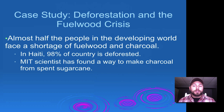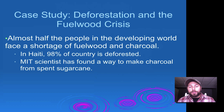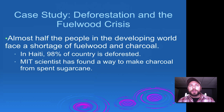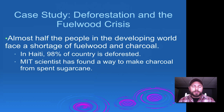We can look at deforestation in the context of the fuel wood crisis. In a lot of areas people still depend on fuel wood to heat their homes and cook with, causing deforestation in those regions. MIT scientists have found a way to make charcoal from spent sugarcane, and there are methods using presses to turn paper into fuel logs. So there are ways around it, but it's still an issue in many countries.